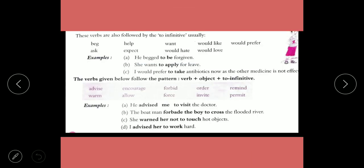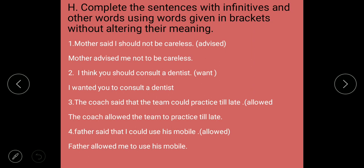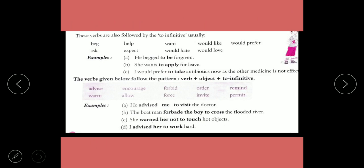Verbs like beg, help, want, would like, would prefer, ask, expect, would hate, would love are also followed by the to-infinitive. For example: 'He begged to be forgiven', 'She wants to apply for leave', 'I would prefer to take antibiotics now'. Some verbs follow the pattern verb + object + to-infinitive, like: 'The boatman advised the boy to cross'.